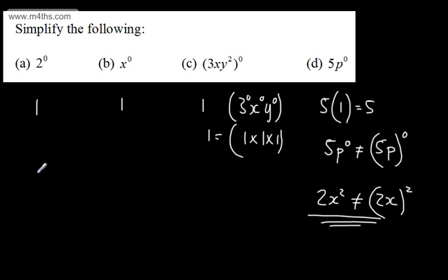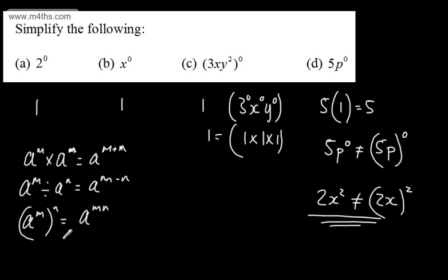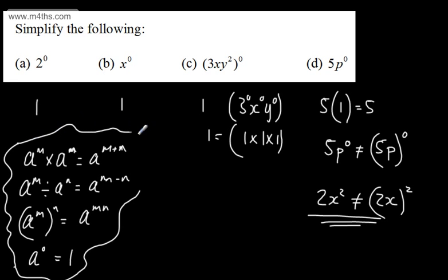Let's recap all four rules. a to the power of m multiplied by a to the power of n gives a to the power of m plus n — we add the powers. a to the power of m divided by a to the power of n gives a to the power of m minus n — we subtract the powers. a to the power of m raised to the power of n gives a to the power of mn — we multiply the powers. And a to the power of 0 gives 1. We've now built up four rules of indices. In the final video we'll look at the last two rules and some extension questions.